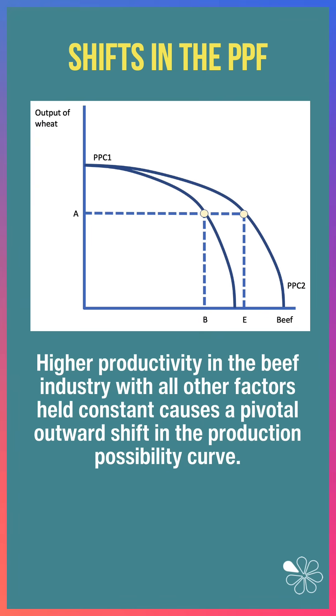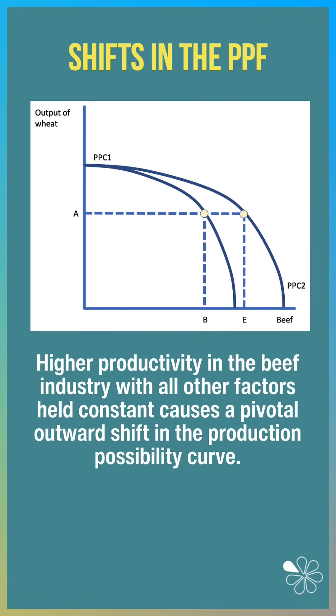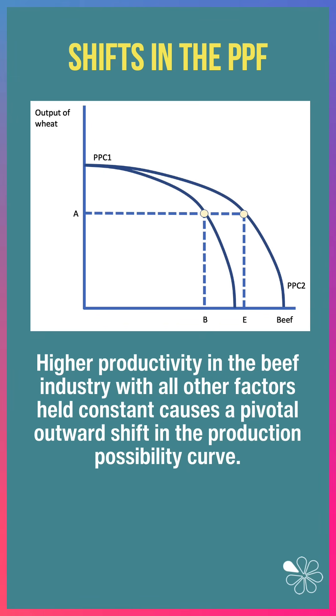In this diagram, higher productivity in the beef industry, with all factors held constant, causes a pivotal outward shift in the production possibility curve.